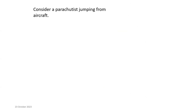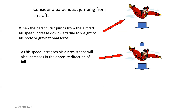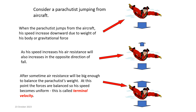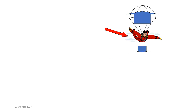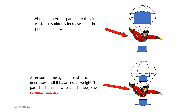To summarize the full sequence: the skydiver jumps, weight causes acceleration, speed increases, air resistance increases and opposes motion, so acceleration decreases. He is still accelerating and still increasing speed, which further increases air resistance, until air resistance balances the weight. At that point he reaches terminal speed. Then, the moment he opens the parachute, the upward force exceeds the downward force, so he decelerates.